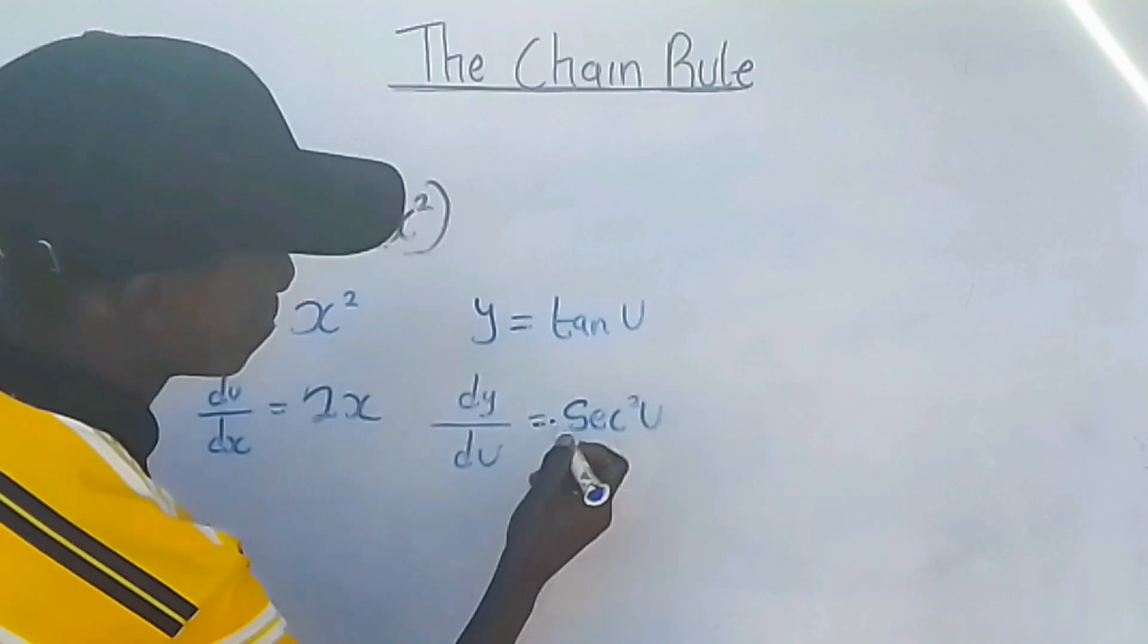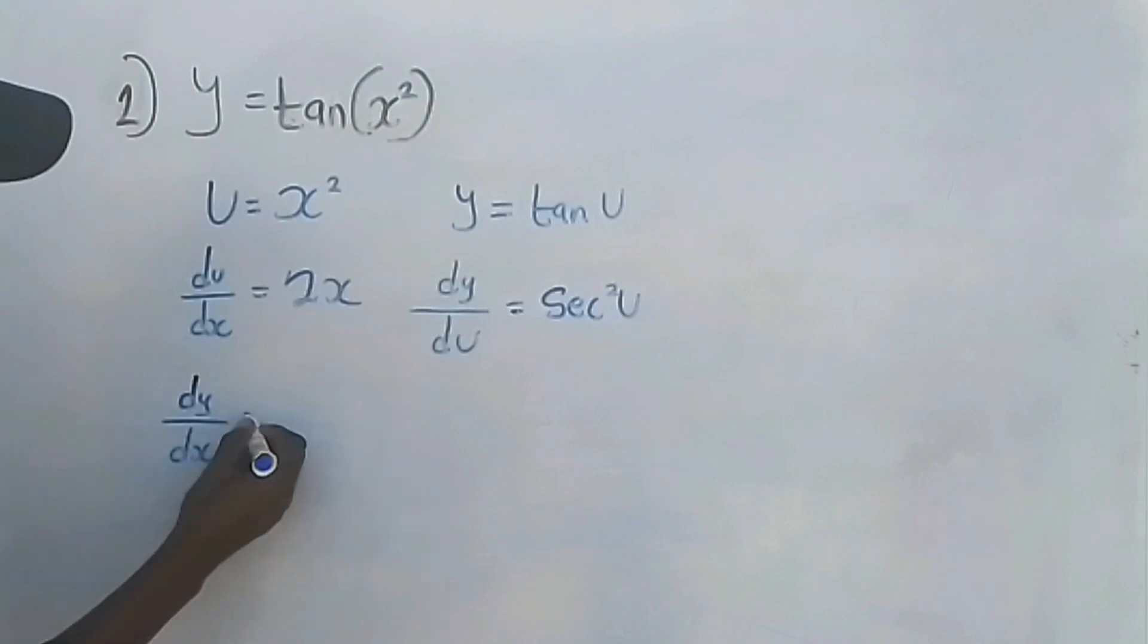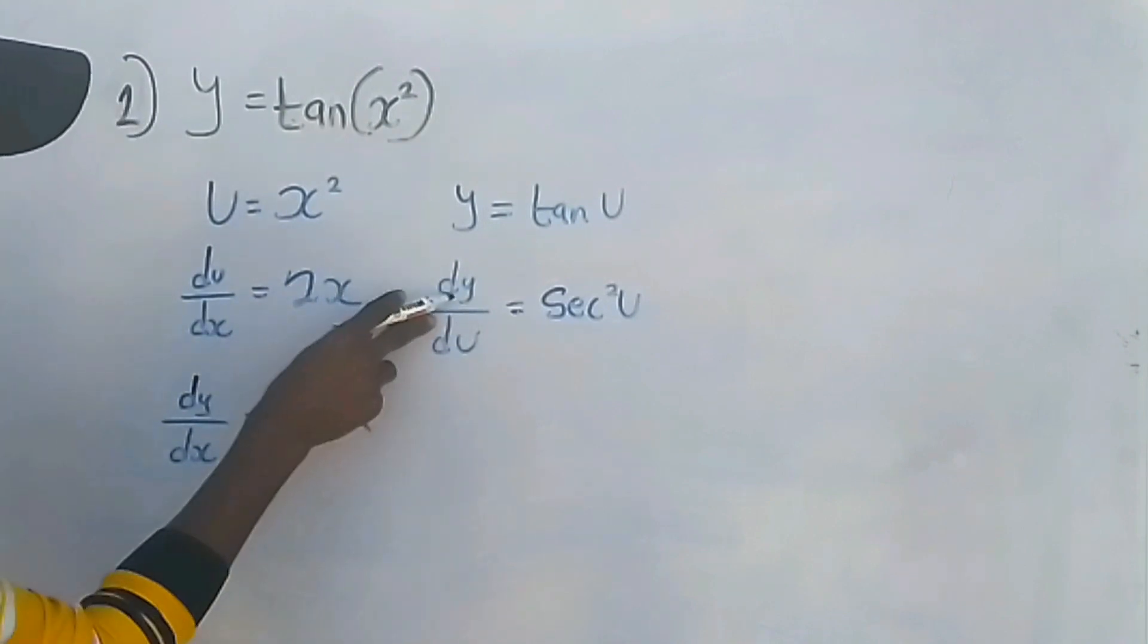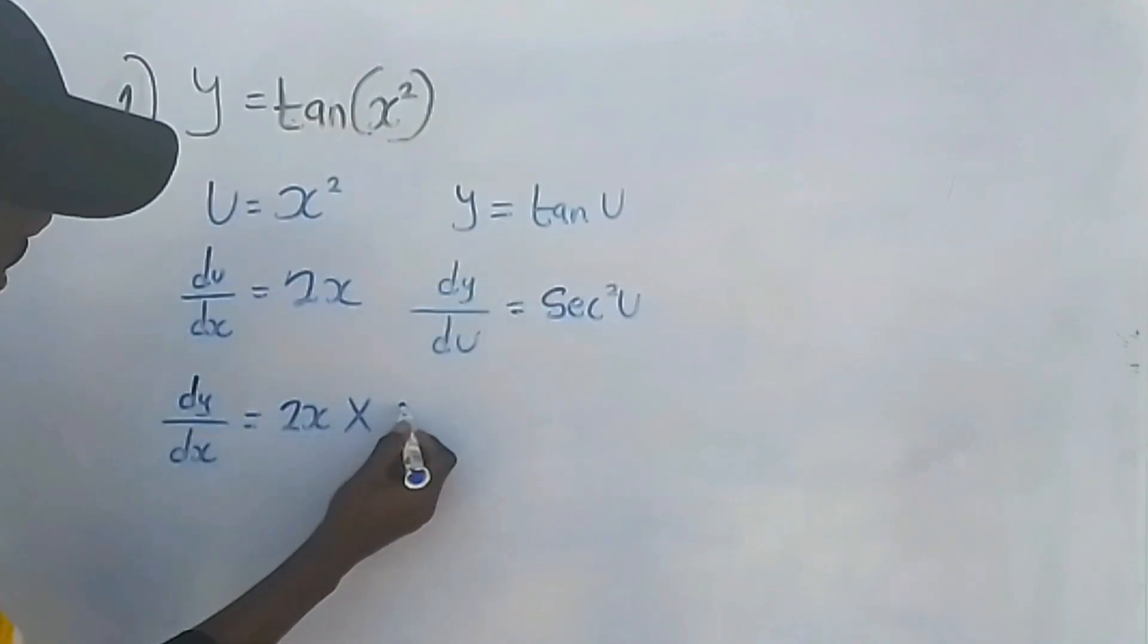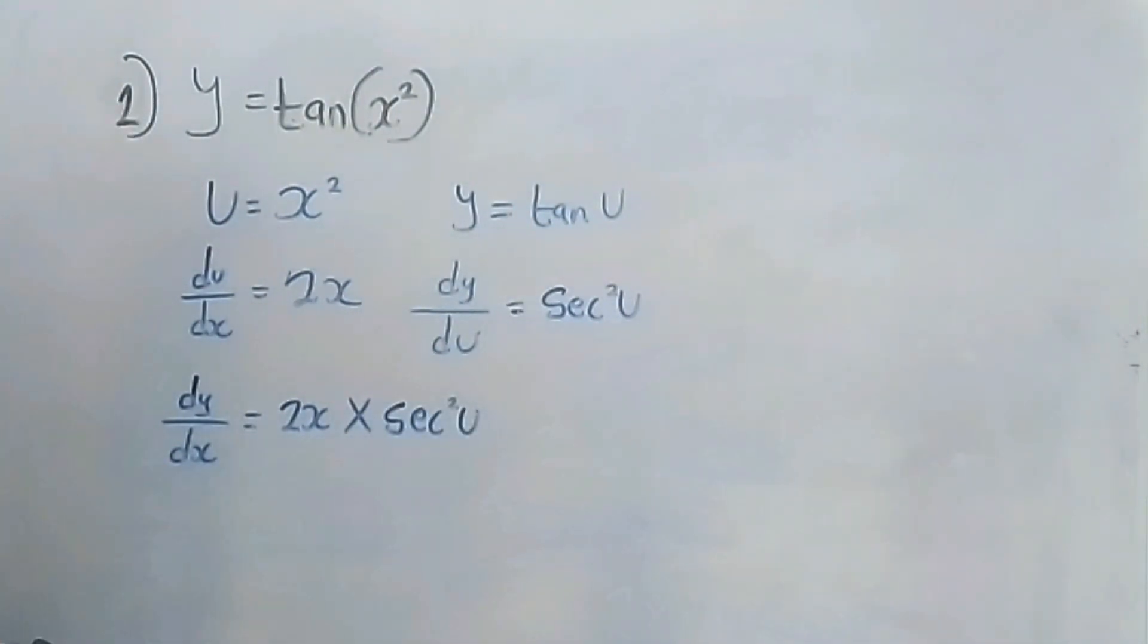squared u. Now dy/dx equals du/dx, which is 2x, multiplied by dy/du, which is sec squared u. So dy/dx